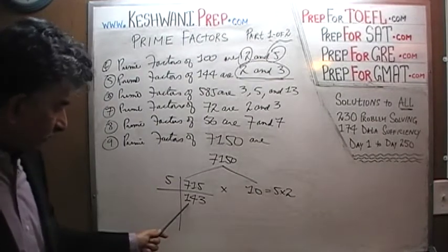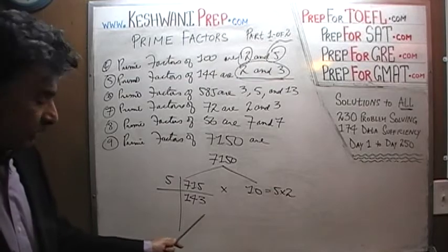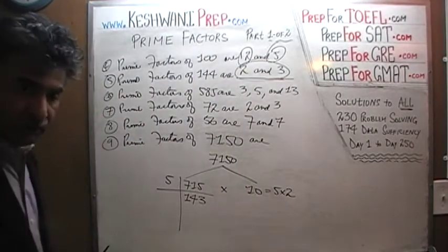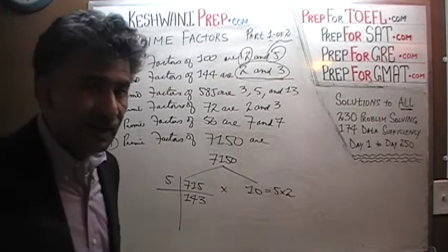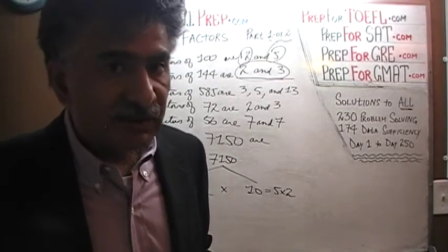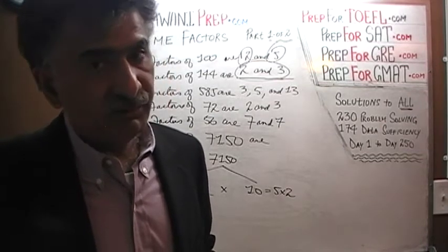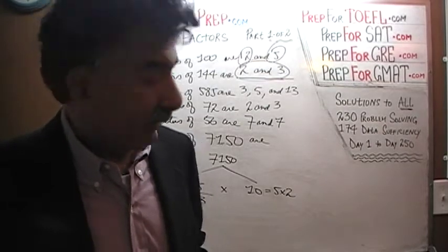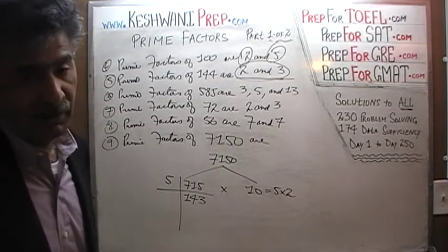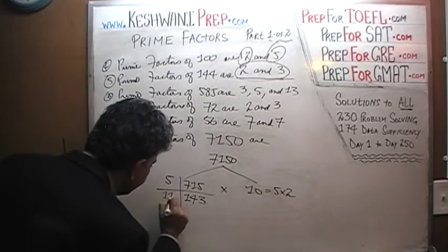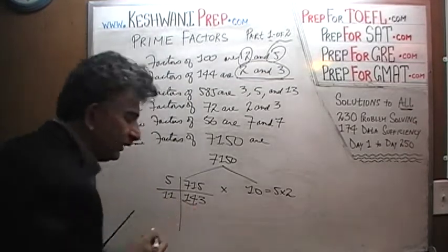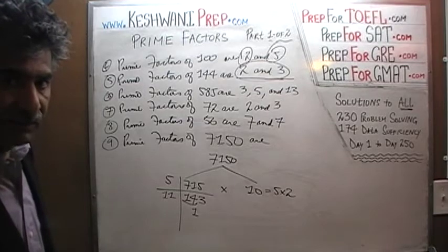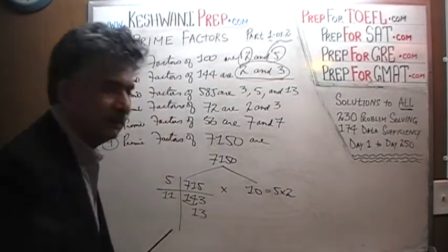Is 143 divisible by 7? No. Is it divisible by 8? No — it's not divisible by 2. Is it divisible by 9? No — since it's not divisible by 3, it can't be divisible by 9 either, as the same digit-sum rule applies. Is it divisible by 10? No — it doesn't end in 0. Let's try 11: how many 11's in 14? 14 has one 11; the remaining 3 joins the 3 to become 33, and 33 has three 11's. So 143 equals 11 times 13.